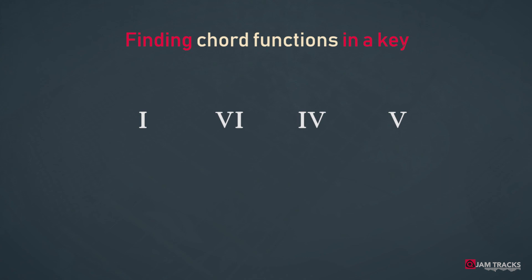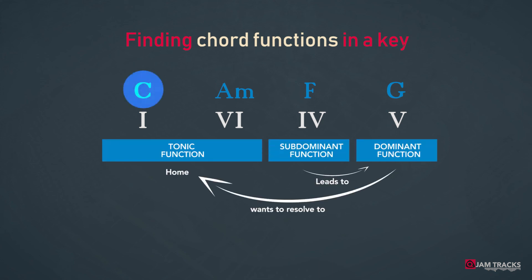Or for instance a 1, 6, 4, 5 progression. Resulting in C, A minor, F and G. Creating two chords from the tonic group. A subdominant and a dominant which resolves back to the home chord 1.